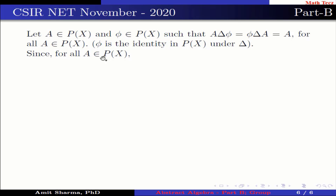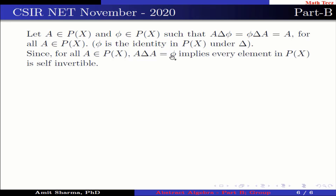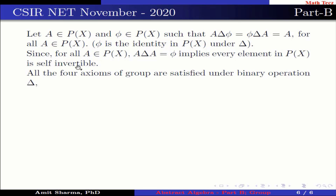Since for all A belonging to P(X), A delta A equals the empty set, every element in P(X) is self-invertible. All four axioms of a group are satisfied under the binary operation delta, which implies P(X) under delta is a group.